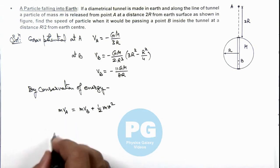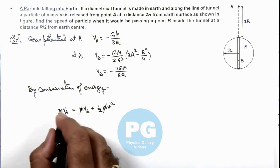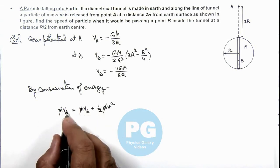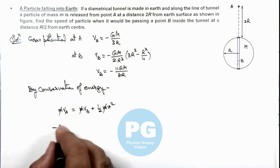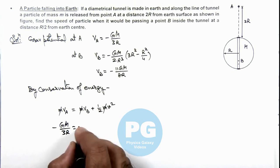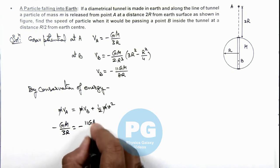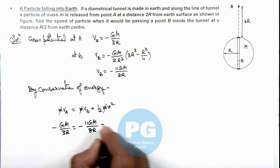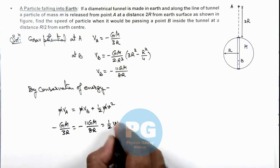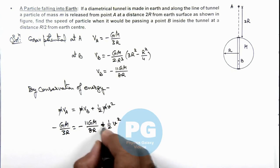So on substituting the values here you can see this m gets canceled out. Here, V_A is minus GM by 3R is equal to minus 11GM by 8R plus half v².